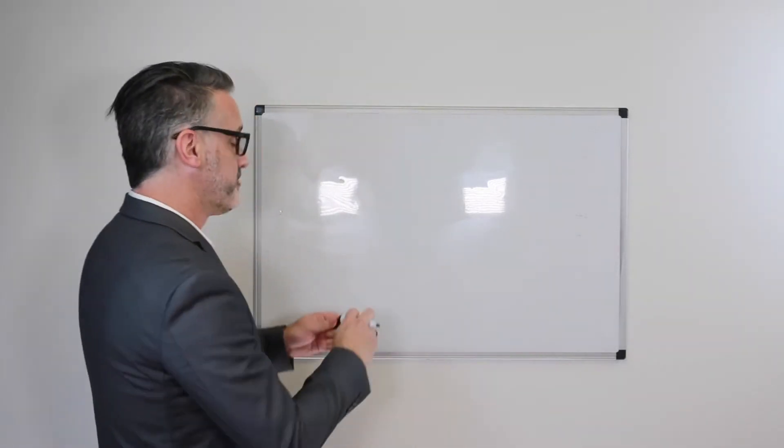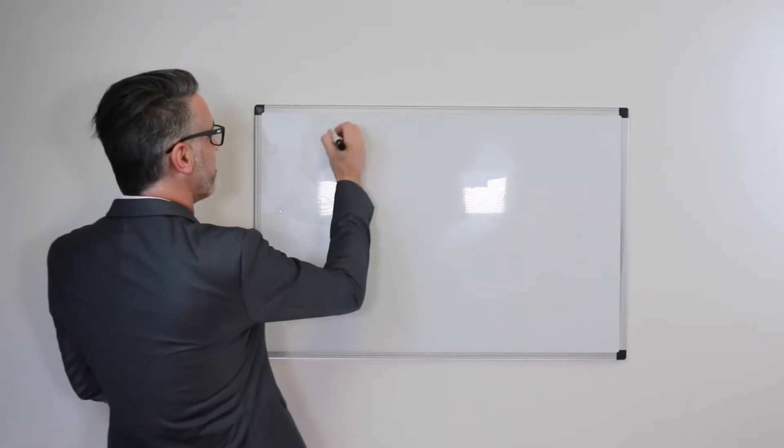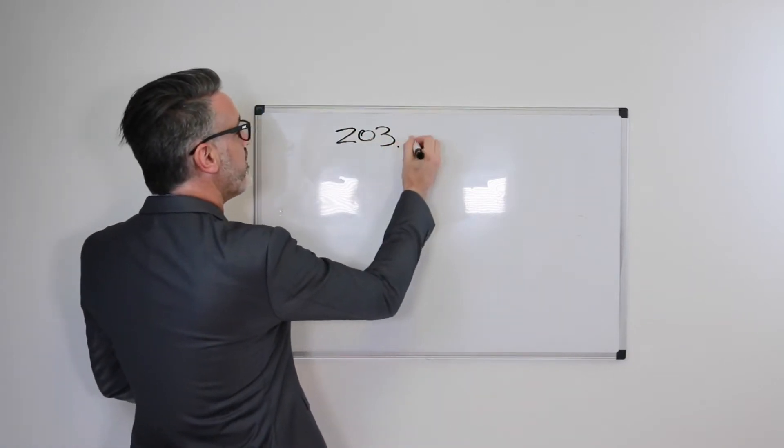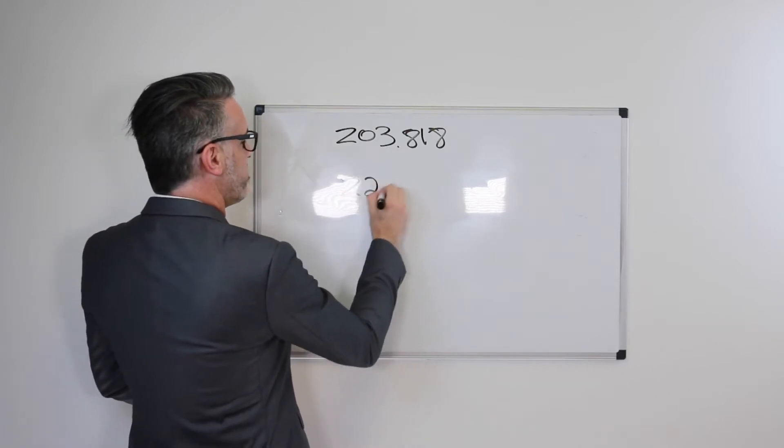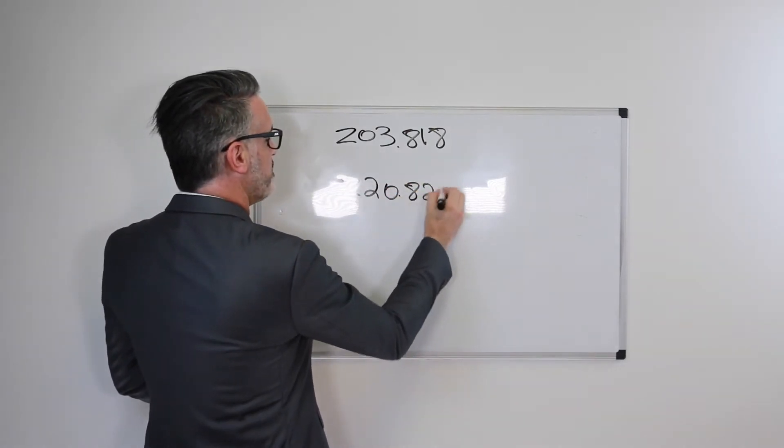In part two of our three series on COVID testing and the coding for it, now we're talking about the diagnosis codes regarding it. So first we're going to talk about two of the Z codes that we have. So we have Z03.818 and Z20.828.